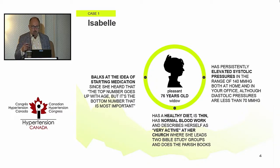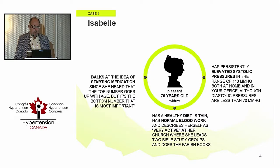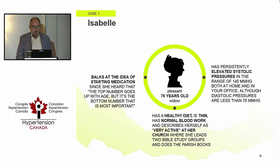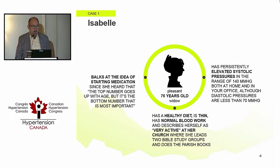This is Isabel: persistently elevated systolic blood pressures in the 140 range; diastolics are perfectly fine. Skinny, normal blood work — CBC, fasting blood sugar, LDL cholesterol all fine. Very active in the church. She didn't like the idea of starting on medication when it was raised, saying 'the bottom number is the more important one.'